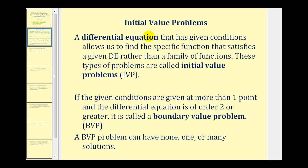A boundary value problem is just a special initial value problem. A differential equation that has given conditions allows us to find the specific function that satisfies a given DE, rather than just a family of functions — these are called initial value problems. If the conditions are given at more than one point and the differential equation is of order two or higher, it is called a boundary value problem, abbreviated BVP. A BVP can have none, one, or many solutions.